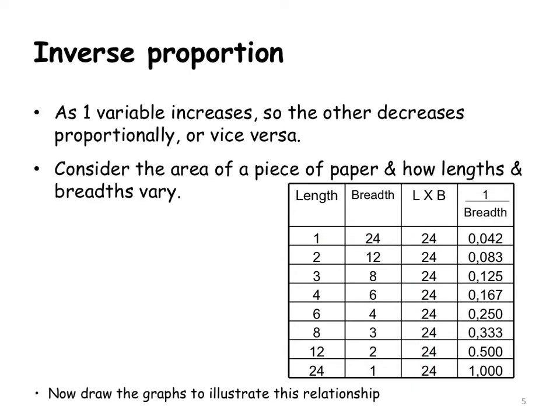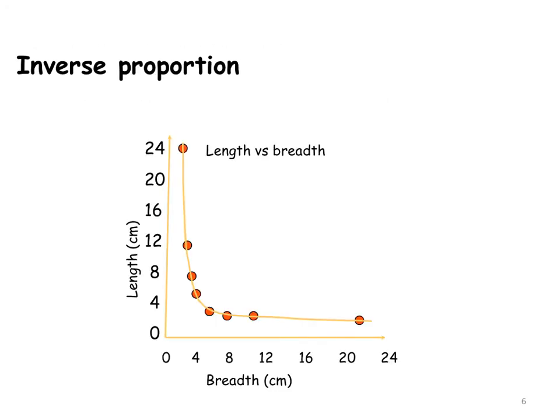So in this case, the length and the breadth - as the length increases, if I've got a piece of paper and the area has to stay the same, as the length increases, the breadth is going to decrease. How do I double check that it is an inverse proportion? I take the breadth and invert it and then I will get a straight line graph.